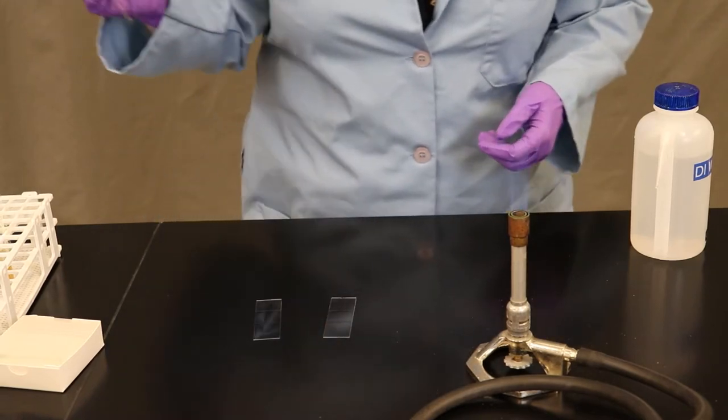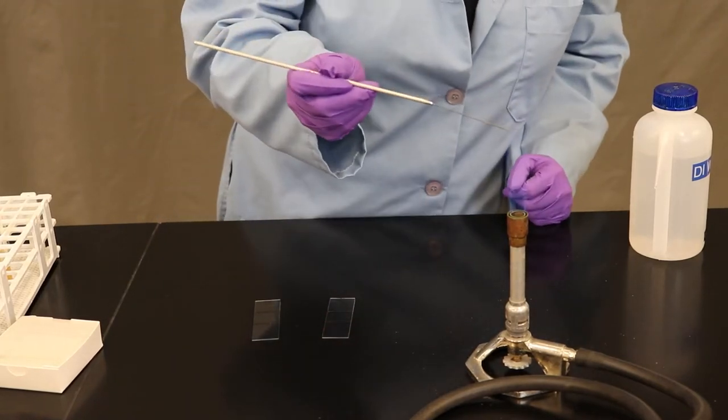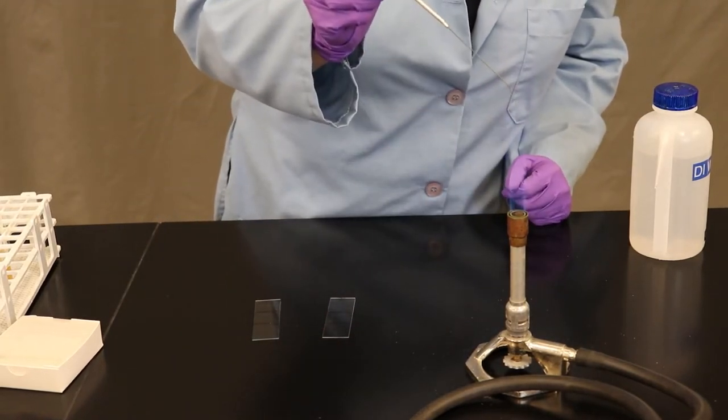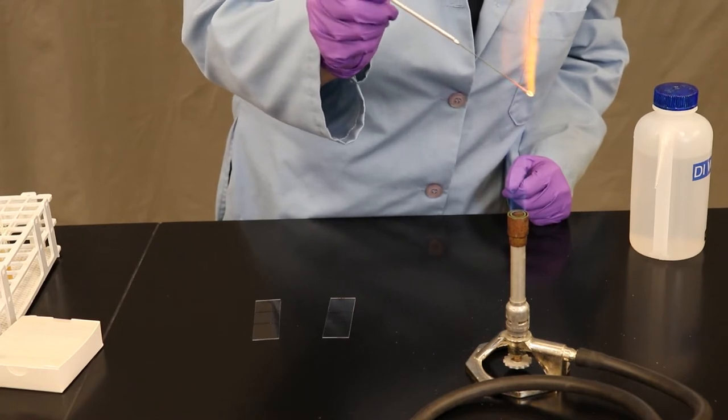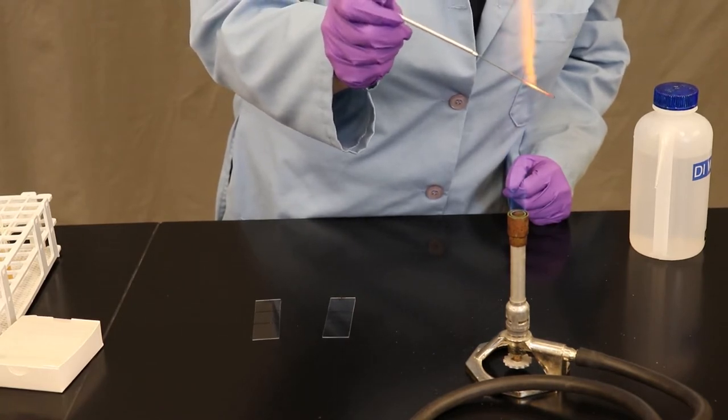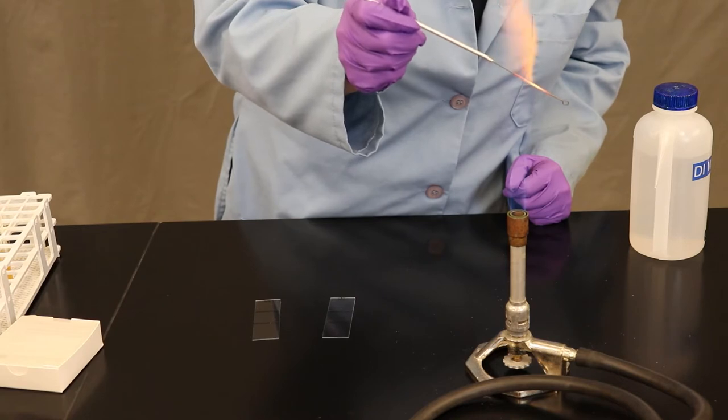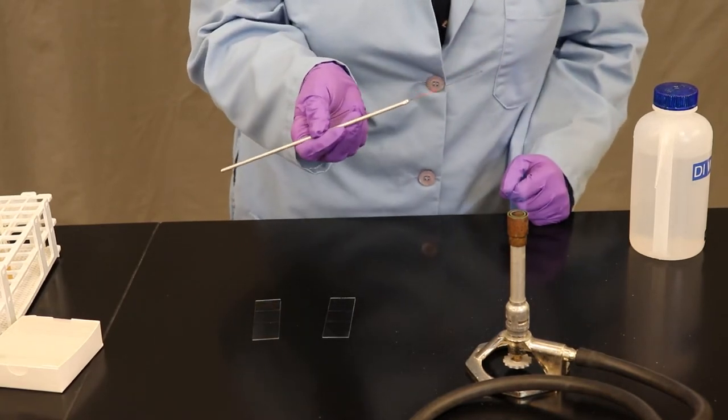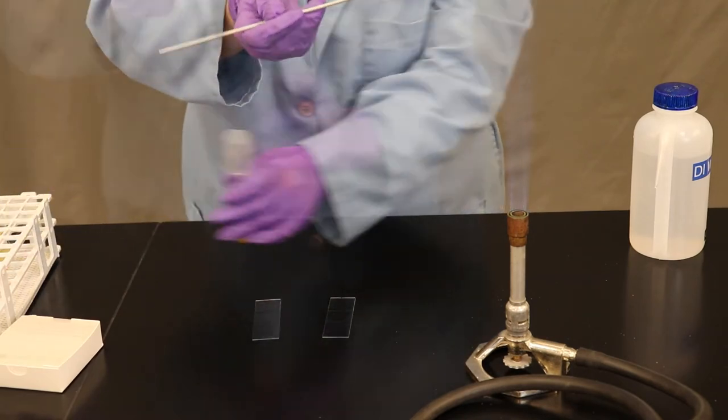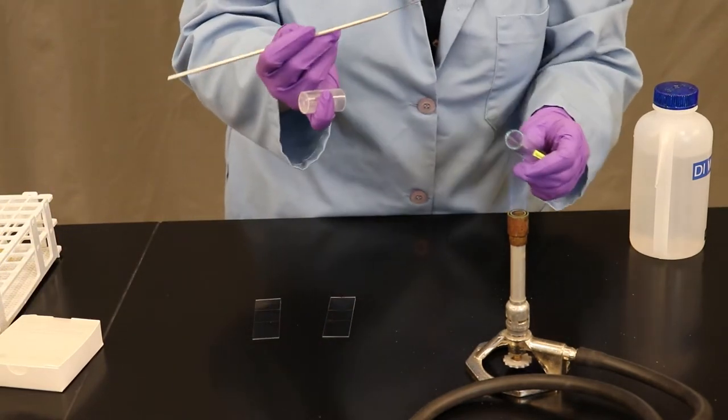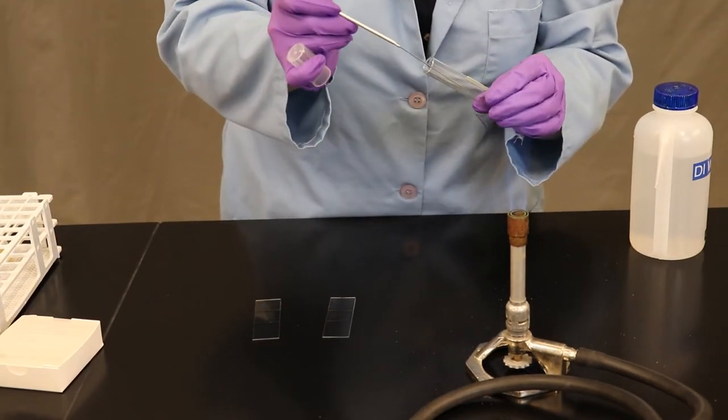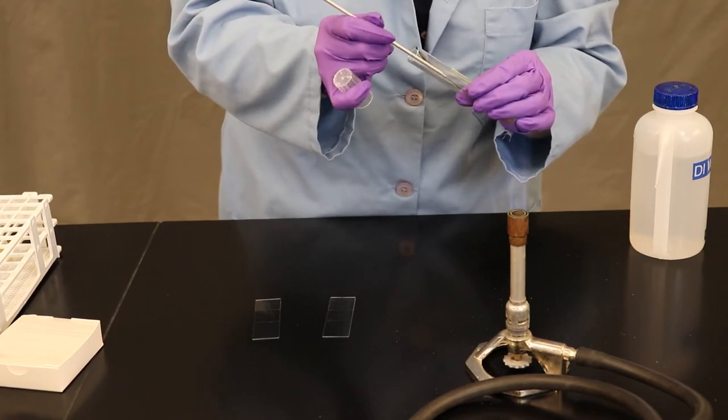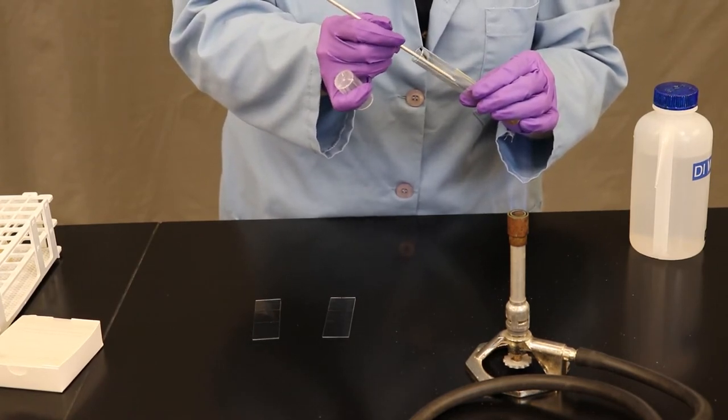Take your metal inoculating loop and sterilize it by holding it through the inner cone until the length of the wire turns completely orange. Allow it to cool for a few seconds. Make sure not to wave it in air, blow on it, or touch it to your skin to cool it. Once cool, you will remove the cap of the test tube with the little finger on your dominant hand and pass the test tube through the fire.